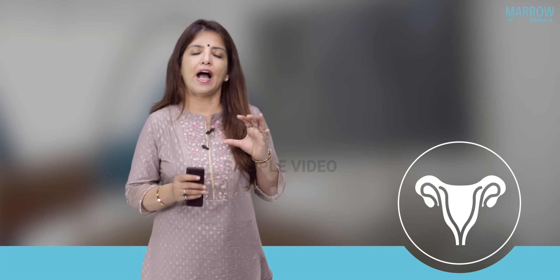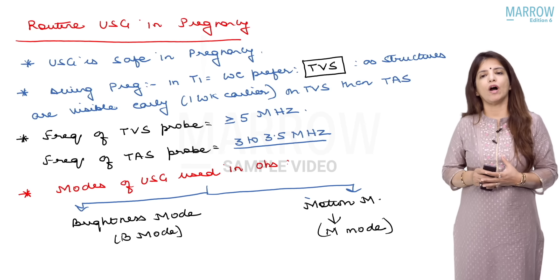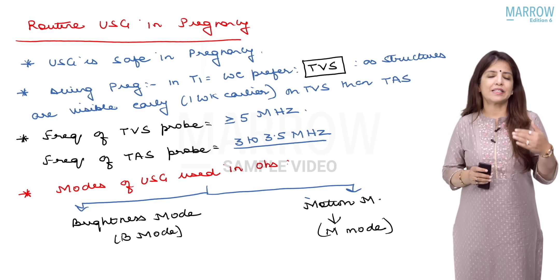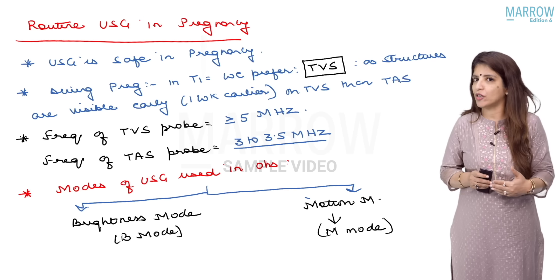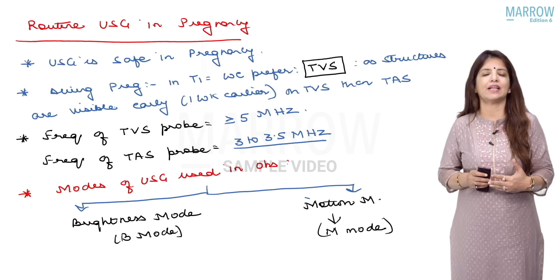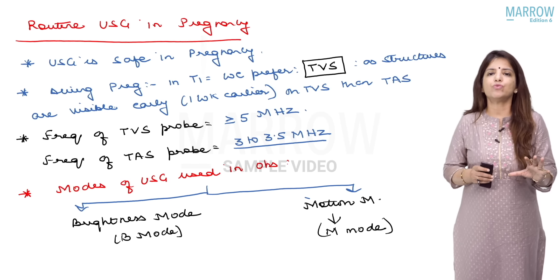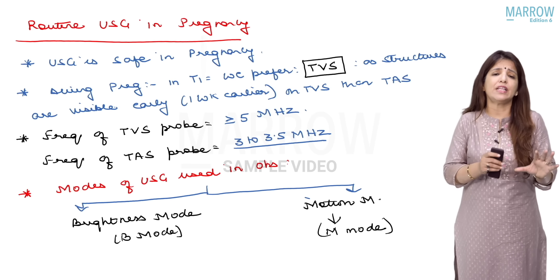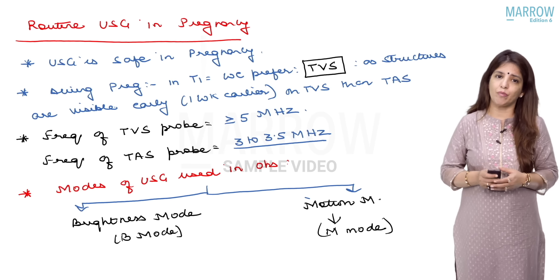Routine ultrasound in pregnancy. Ultrasound is very safe in pregnancy. I've already told you about the maximum radiation exposure which can be given to a pregnant female, and that is up to 5 rads. Ultrasound is a very, very safe investigation during pregnancy.